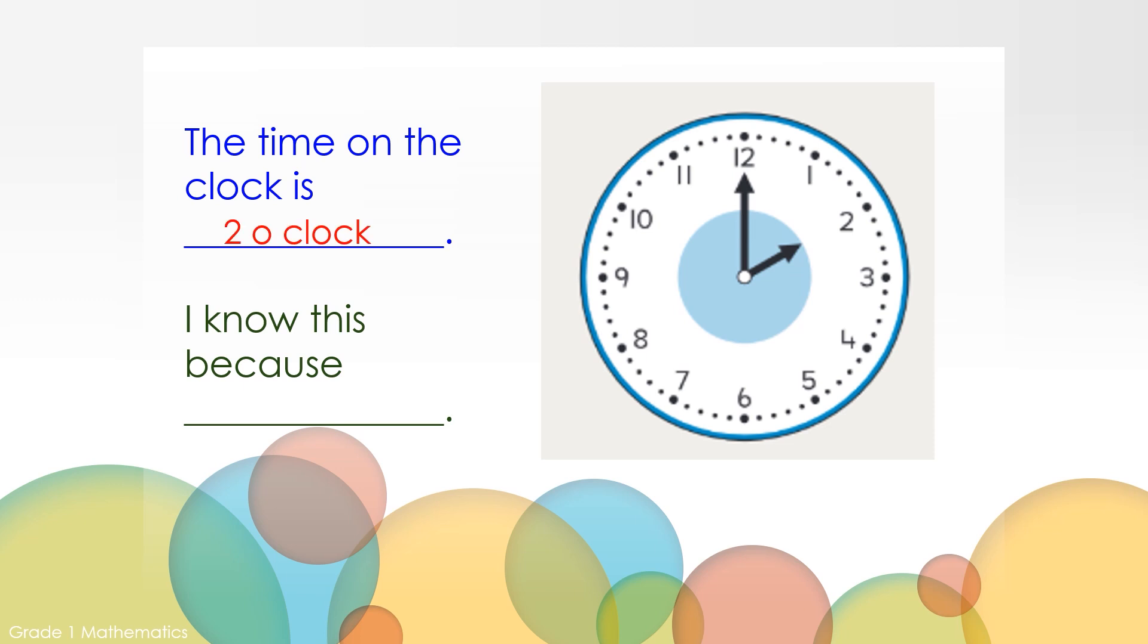The time on the clock is 2 o'clock. I know this because the hour hand is pointing at the 2 and the minute hand is pointing at the 12, which means it is the beginning of the hour.